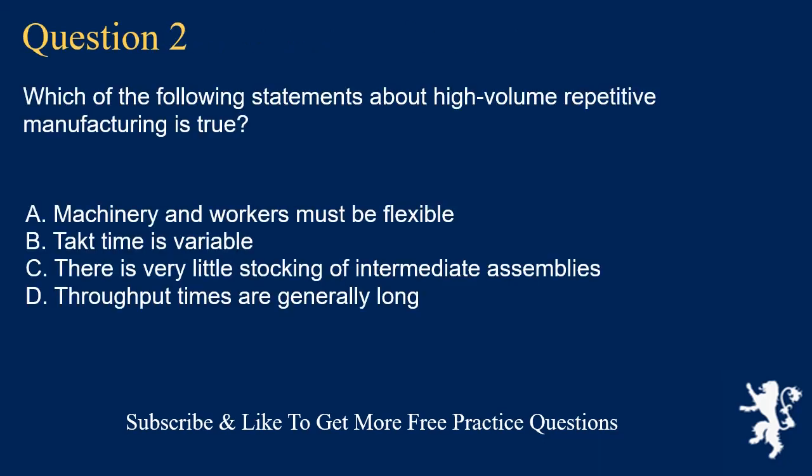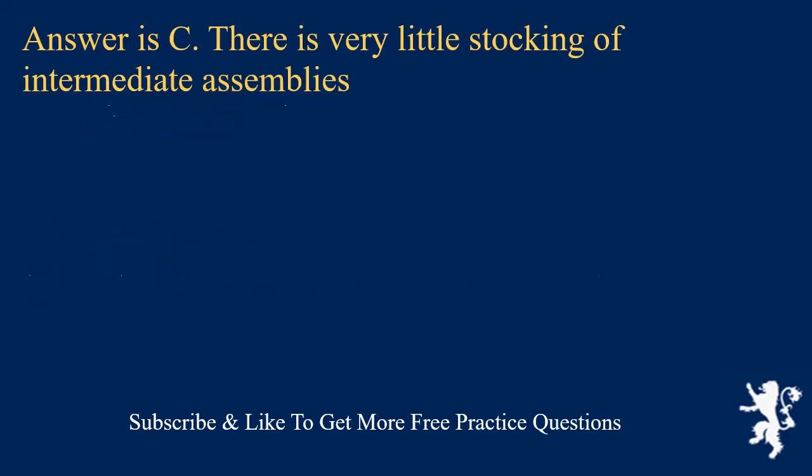Question 2. Which of the following statements about high-volume repetitive manufacturing is true? A. Machinery and workers must be flexible. B. Takt time is variable. C. There is very little stocking of intermediate assemblies. D. Throughput times are generally long. Answer is C. There is very little stocking of intermediate assemblies.